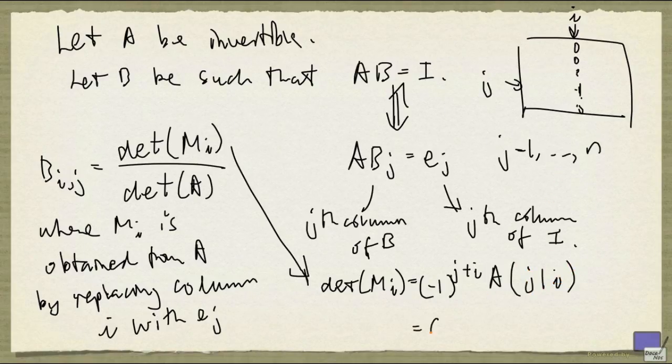And that, we can call it Cji. Now be careful of the indexing. It's j before the i, and it is for the entry Bij. And so Bij is given by Cji divided by the determinant of A.